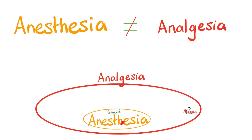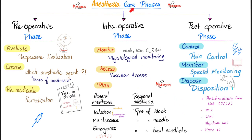General anesthesia has analgesia with it, but not every analgesia has general anesthesia with it. Anesthesia care phases: preoperative — evaluate, choose, and premedicate; intraoperative — monitor, access, and plan; postoperative — control, monitor, and discharge.